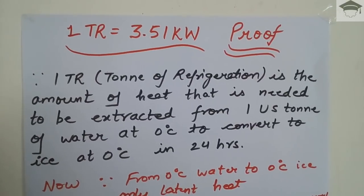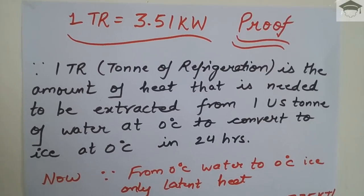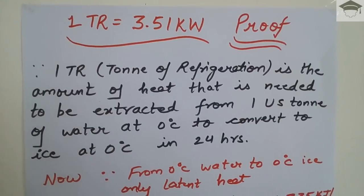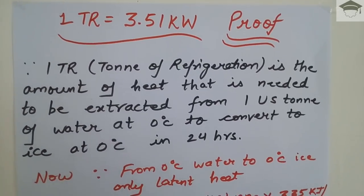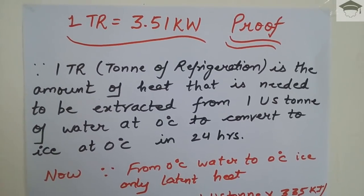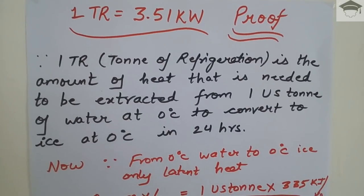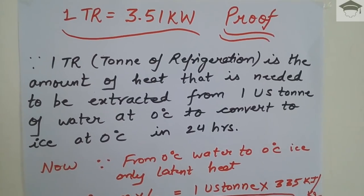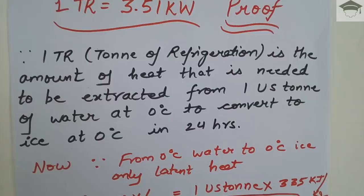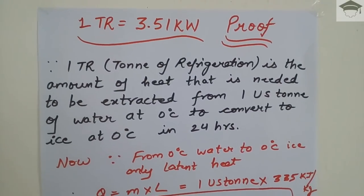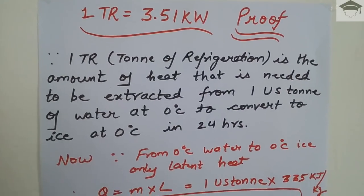1 TR — that is 1 ton of refrigeration — is the amount of heat that needs to be extracted from 1 US ton of water at 0°C to convert it into ice at 0°C in 24 hours. This is the definition of 1 TR.